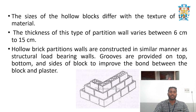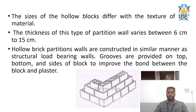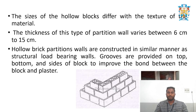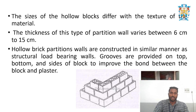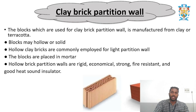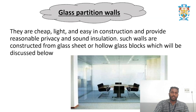The thickness of the clay brick partition wall varies between 6 centimeters to 15 centimeters. Grooves are provided on the top, bottom, and sides of the block to improve the bond between the block and the cement plaster. Hollow brick partition walls are constructed in a similar manner to structural load-bearing walls.